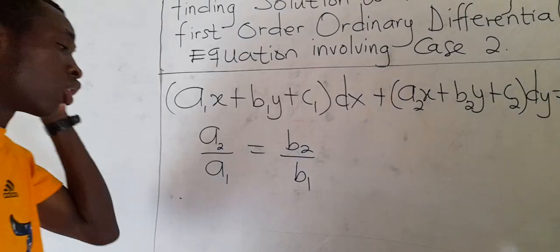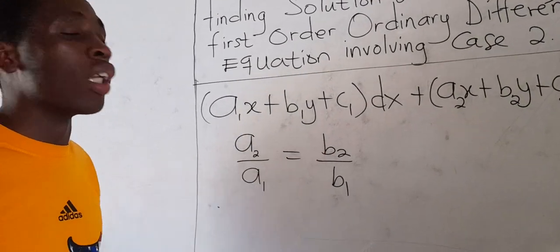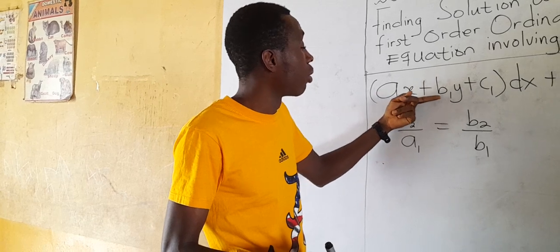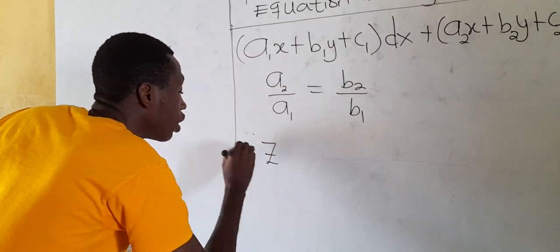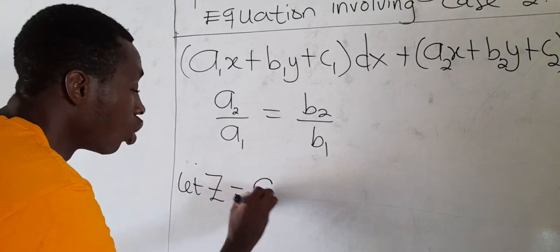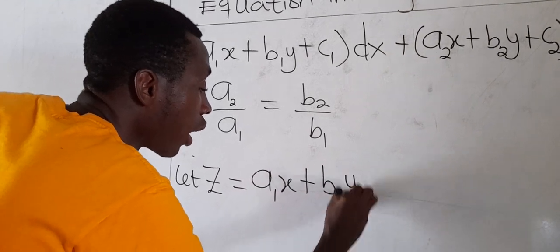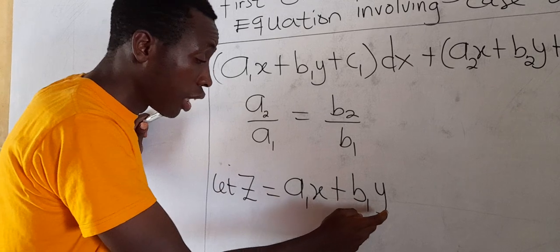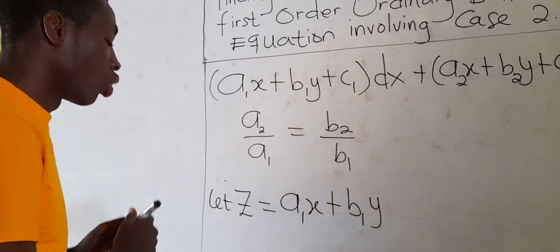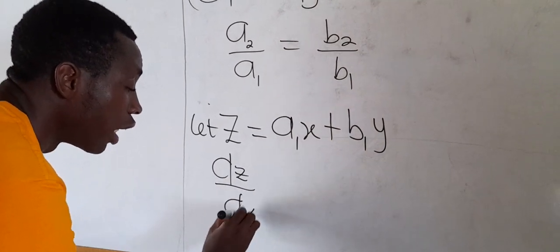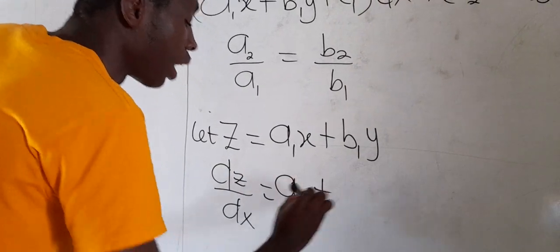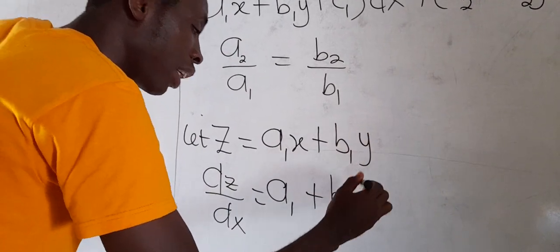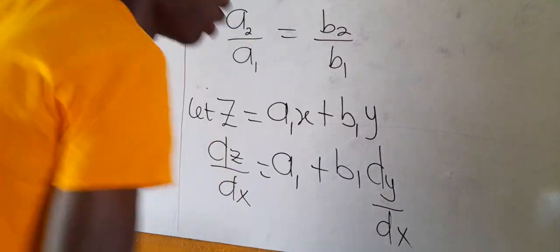After you determine that your a2 over a1 is equal to your b2 over b1, the next step is to introduce a variable z and let it equal a1x plus b1y. Then you differentiate z with respect to x, giving dz/dx equal to a1 plus b1 times dy/dx, since y is a dependent variable.